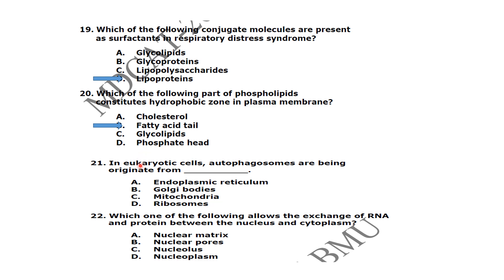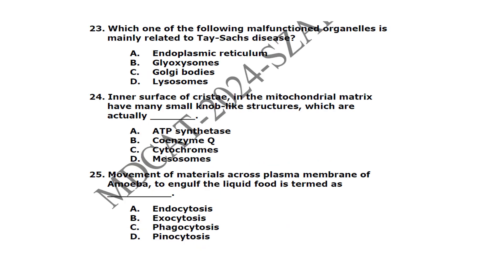In eukaryotic cells, autophagosomes are being originated from the endoplasmic reticulum. Which one of the following allows the exchange of RNA and protein between the nucleus and cytoplasm? Nuclear pores are mainly responsible for this. Which one of the following malfunctions is mainly responsible for Tay-Sachs disease? Lysosome malfunction is responsible.